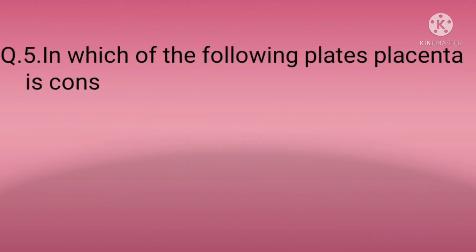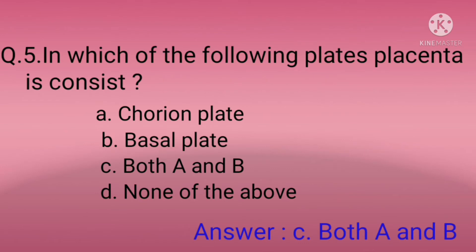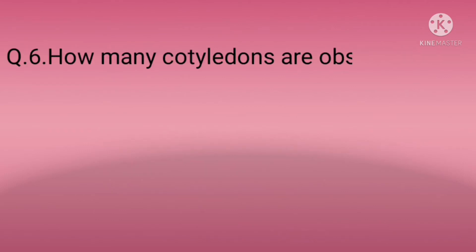Question five: Which of the following plates is the placenta consisted of? Option A: Chorionic plate, Option B: Basal plate, Option C: Both A and B, Option D: None of the above. The correct option is C — both A and B. The placenta consists of both the chorionic plate and the basal plate.